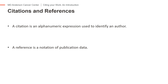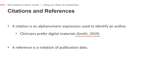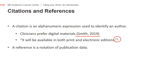Citations appear in the body of a paper after sentences and paragraphs. Usually, citations are constructed using names and or numbers. In the first example, the author's surname and publication year identify the source. In the next example, a number formatted as superscript identifies the source. A superscript character is set just above the normal line of type.